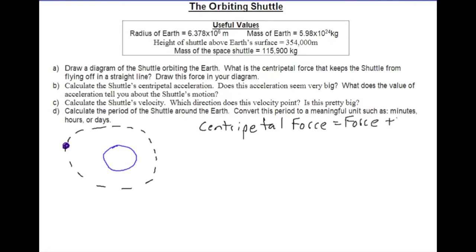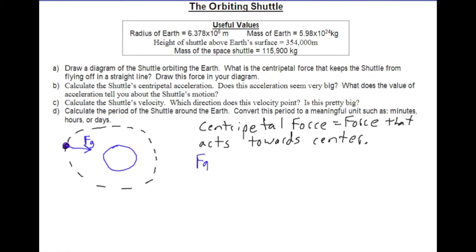The problem asks us to identify the centripetal force. A centripetal force is a force that acts towards the center of an object — essentially, what force is directed from the satellite towards the center of its orbit. Since the satellite and the Earth are attracted to each other due to gravity, the centripetal force in all cases of uniform circular motion in space is the force of gravity.